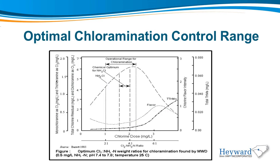This graph represents the optimal control range of monochloramine when comparing it to the formation of flavor and total trihalomethane. The upper dashed line is the monochloramine concentration. As monochloramine concentration reaches the maximum, there is very little free ammonia in the sample. As the monochloramine concentration moves past the maximum, additional dosed chlorine decomposes the monochloramine into dichloramine and trichloramine, which have strong taste and odor, as indicated with the increase in the flavor line. These forms are also more reactive than monochloramine and will increase the disinfection byproducts, as indicated in the total trihalomethane line on the graph.